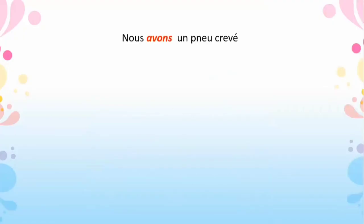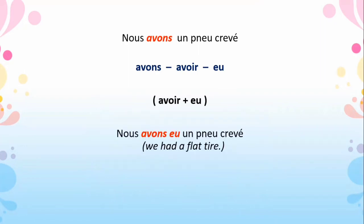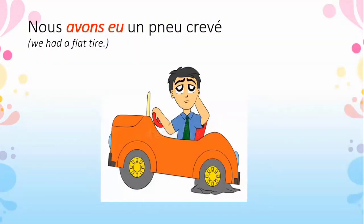Next: 'Nous avons un pneu crevé' — we have a flat tire. Here 'avons' comes from the irregular verb 'avoir', and the past participle of 'avoir' is 'eu'. So avoir plus past participle gives: nous avons eu un pneu crevé — we had a flat tire.